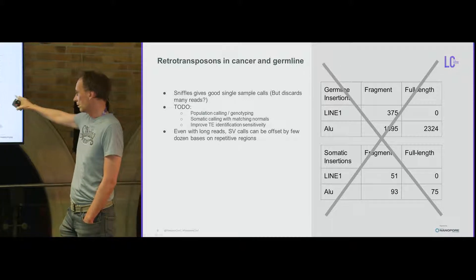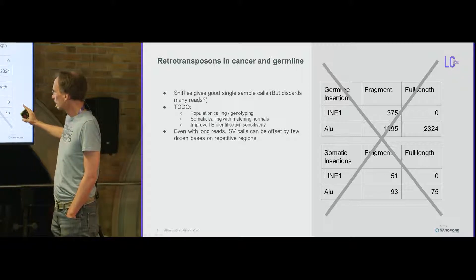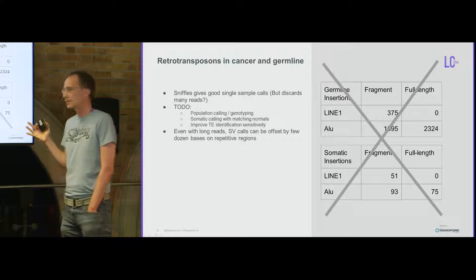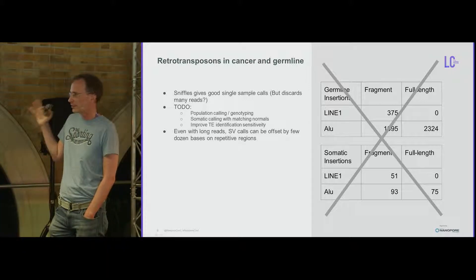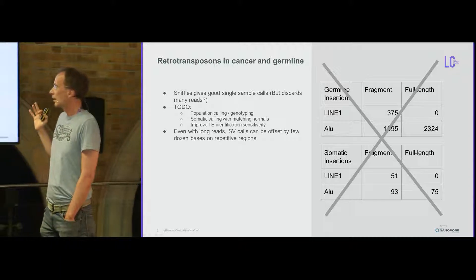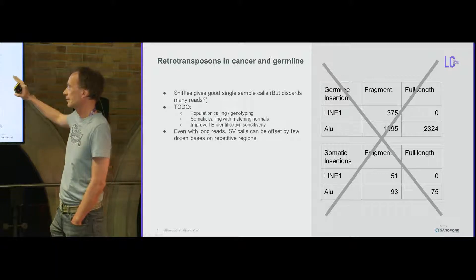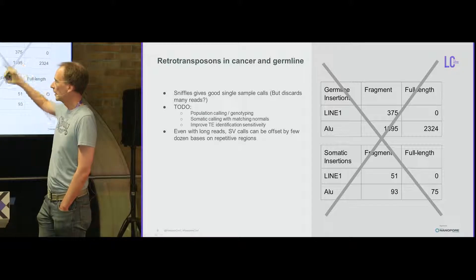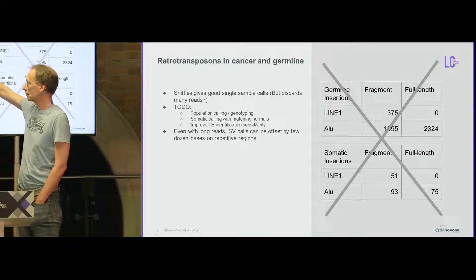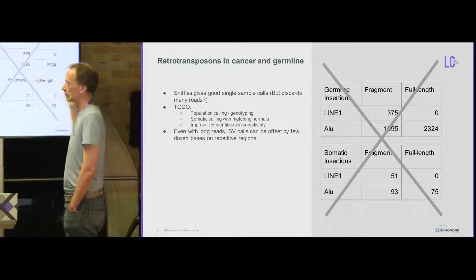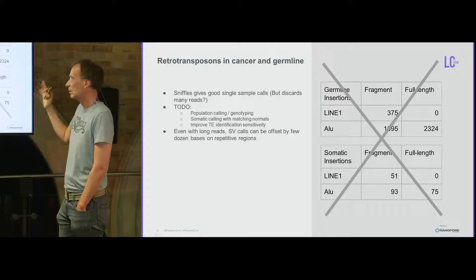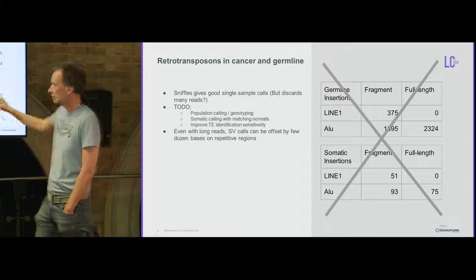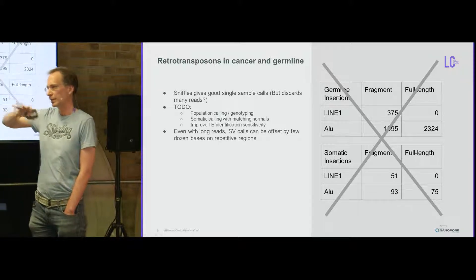I made a table but the numbers are too high or wrong somehow. The overall story is that Sniffles is the best SV caller I know of, though it's not perfect and there are issues. Important things still needed are population calling and genotyping methods — when you know a variant you want to know whether your sample has it — and that same approach can be used for somatic calling, which is currently missing. Whether simple mapping to RepeatMasker is enough for transposable elements is an open question, and even with long reads, small repeats at breakpoints cause problems.